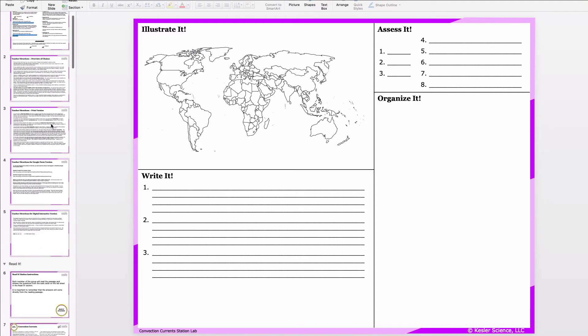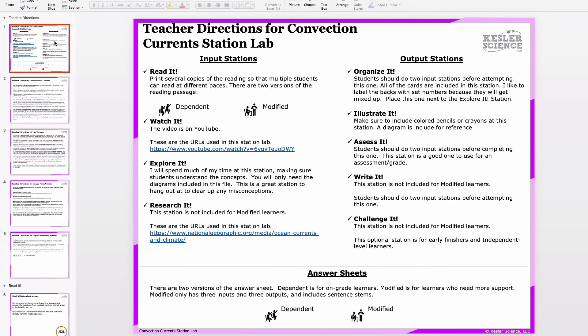Going back up to the teacher directions here. If your students aren't allowed to move around the room or share materials, you might consider doing several of the stations together as a class, especially the Watch It and the Research It station. Then you could print out copies of the remaining materials for each student. Now, some classes may need two days to complete the stations, especially the first few times you run them.